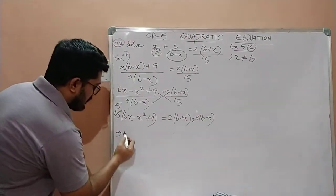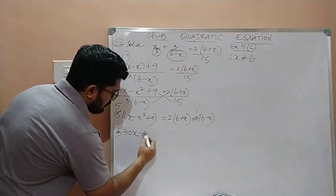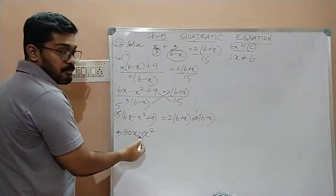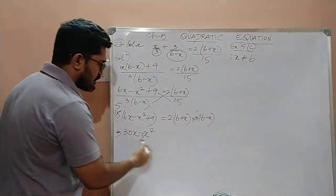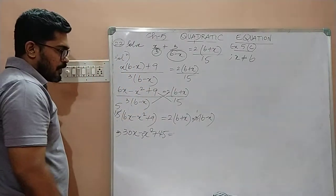So 5 into 6x is what? 30x. 5 into x square is what? 5x square. Don't forget to put this minus sign, children. Plus into minus is minus. Then 5 into 9 is what? 45.